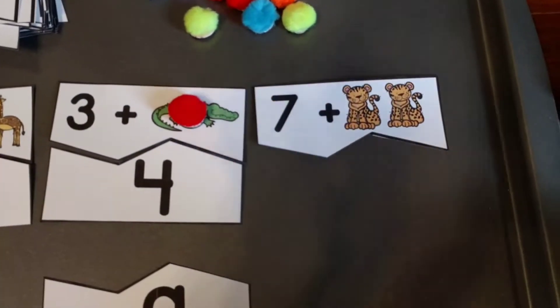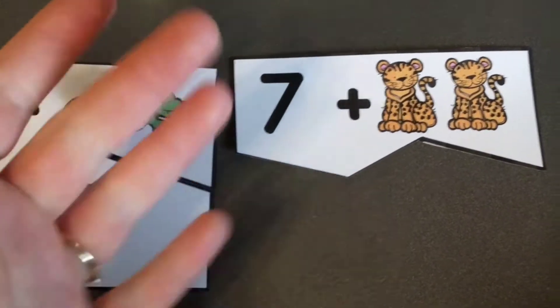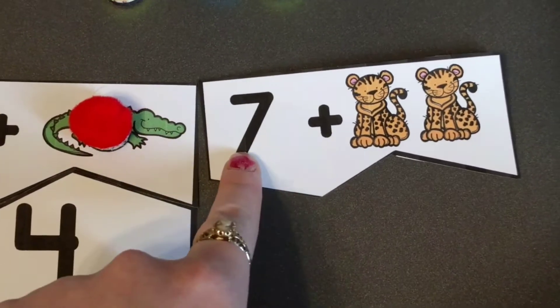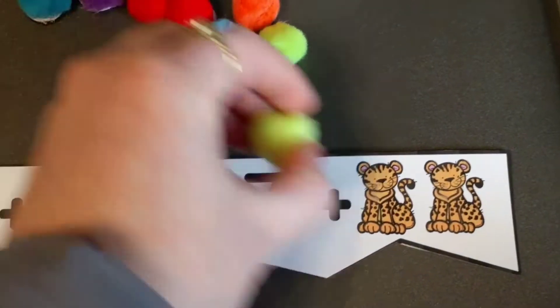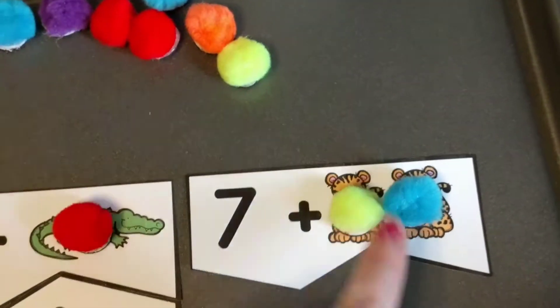And then with this one, the same thing. So they're going to say 7. They're not going to count 1, 2, 3, 4, 5, 6, 7. They're going to say it, because we already know we have 7 already. All right, so 7, 8, 9. The objects just make it a little bit more tactile.